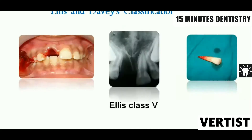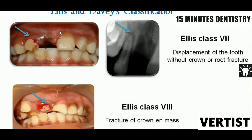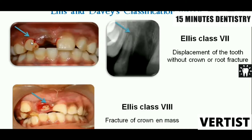Class 5 is avulsion — the tooth has completely come out of the socket, which is a more severe form of traumatic injury. LS class 6 is fracture of the root, confirmed only on radiograph, with or without loss of the crown structure. Class 7 is luxation or displacement injuries, where the tooth has been displaced partially out of or within the socket, or in a labial, palatal, mesial, or distal direction. LS class 8 is fracture of the crown in mass — the complete crown structure is fractured.